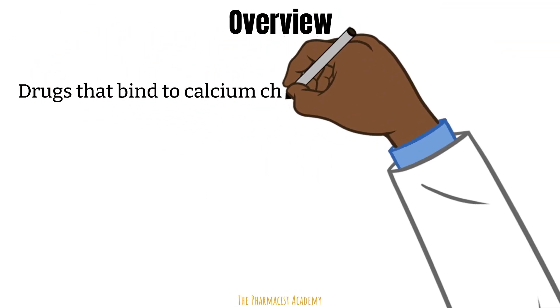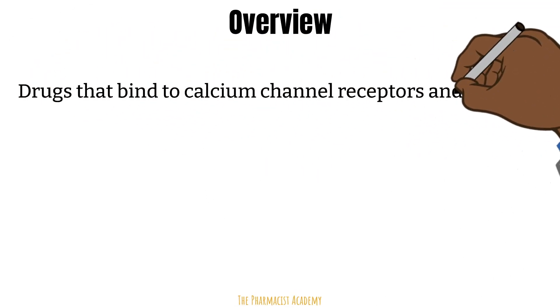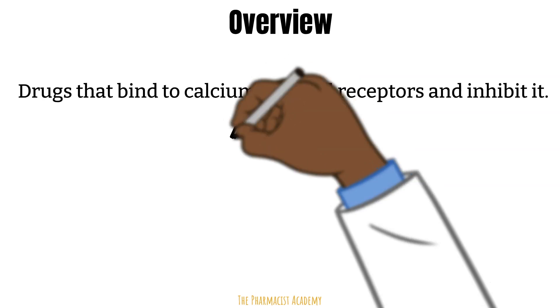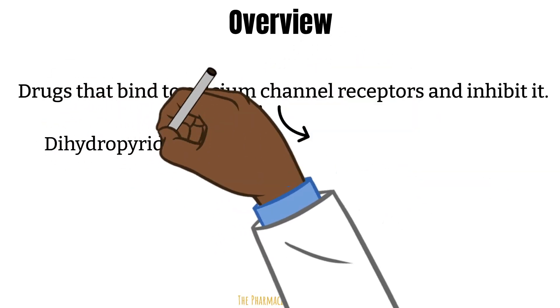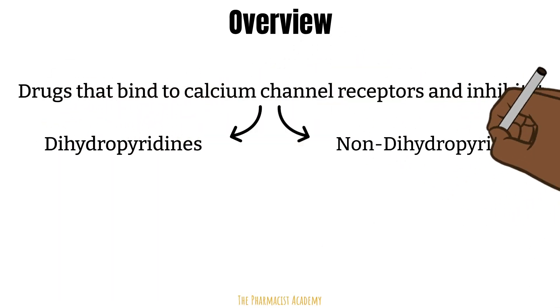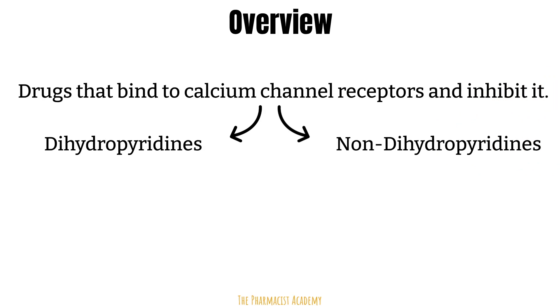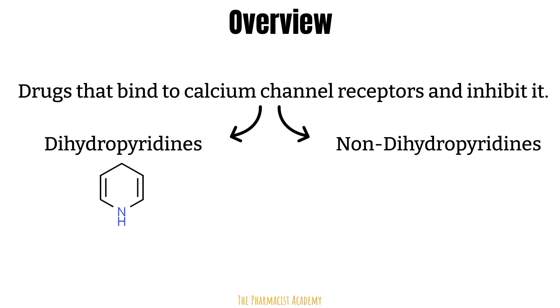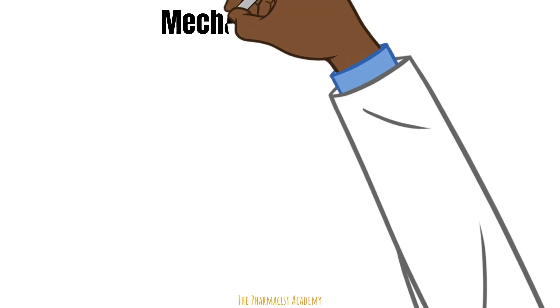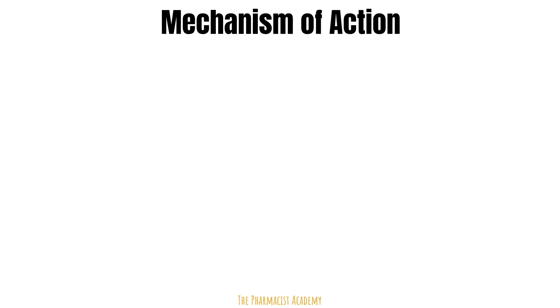Calcium channel blockers refer to drugs that bind to the calcium channel receptors and inhibit them. They can be divided into two main categories: the dihydropyridines and the non-dihydropyridines. In terms of chemical structure, one has the dihydropyridine ring and the other doesn't. This contrast is also the reason why their mechanisms are different and why we use them for different indications.